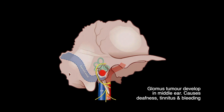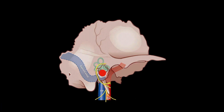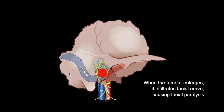Glomus tumours usually develop in the middle ear. Initially they cause deafness, tinnitus, and bleeding. When the tumour enlarges, it infiltrates the facial nerve and causes facial paralysis.